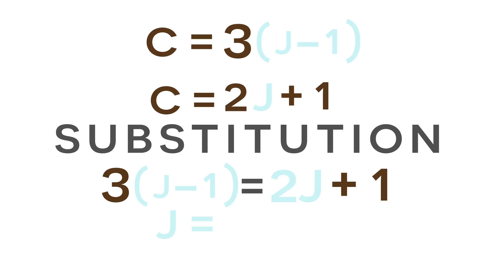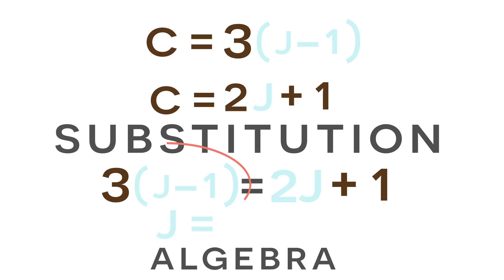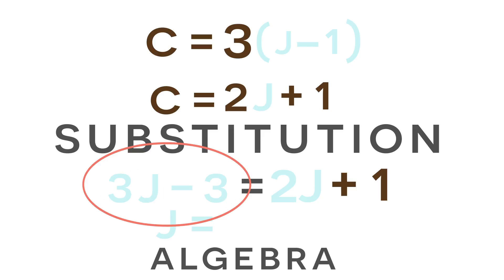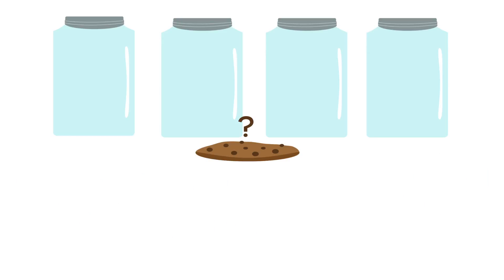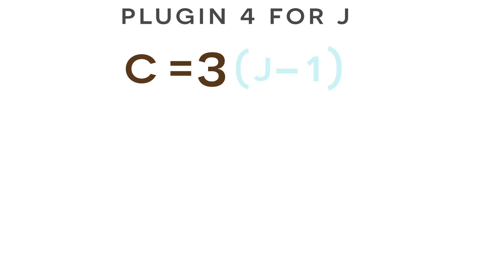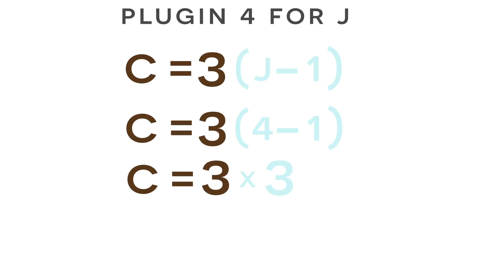Now we can solve this equation for J using simple algebra. First, simplify the left side by multiplying: three times J minus one gives us three J minus three. Then, subtracting two J from both sides and adding three to both sides, we get J equals four. So we have four jars. We can now plug four in for J into our first equation — C equals three multiplied by four minus one, which is three times three, giving us C equals nine. So we have nine cookies and four jars, and we have officially solved our word problem.